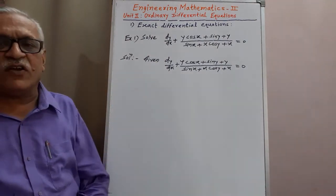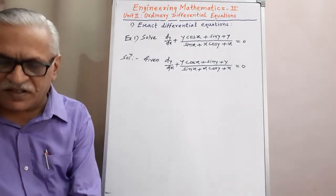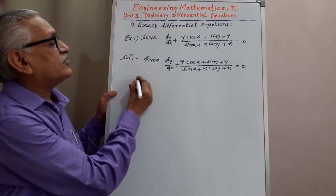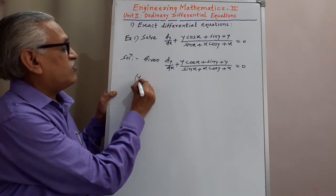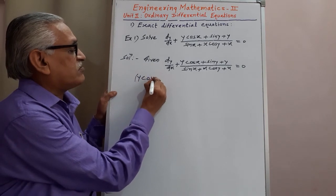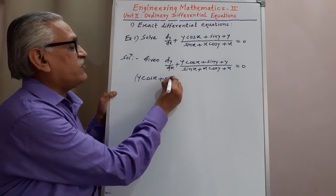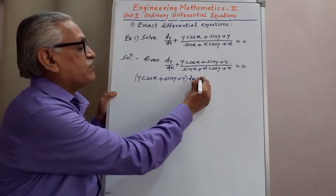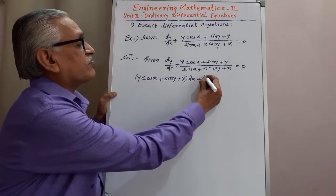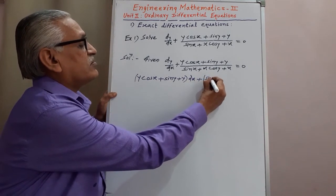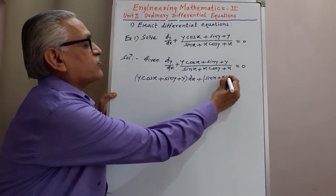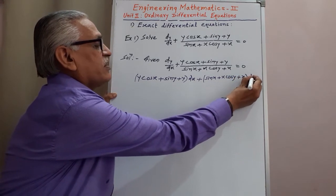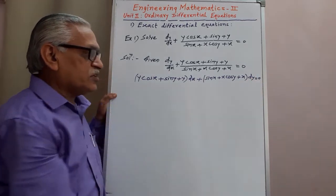As we know, every equation we can write in the form of M dx + N dy = 0. Therefore, cross-multiplying, we get (y cos x + sin y + y) dx plus (sin x + x cos y + x) dy equals 0.